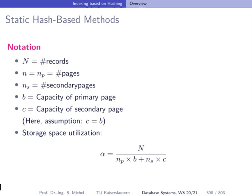Let's have a look at some simple ways to organize hash tables in a static case. That means they are not growing in number. So we have a certain number of pages. We can have overflow pages, but we will not change the number of primary pages. A little bit of notation. So we have N records, n equals np equals number of pages and ns secondary pages, which are the overflow pages. We can distinguish between the capacity of primary pages b and the capacity of secondary pages c, but usually we do not do that. And then if we have this information, we can compute so-called storage space utilization, which is simply the number of records divided by the potential space: α = N / (np × b + ns × c).